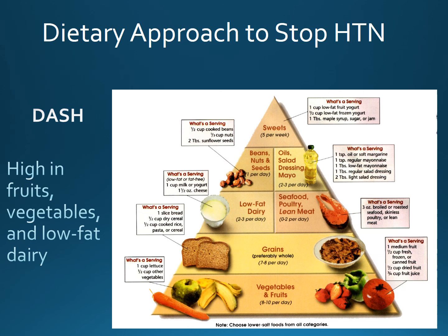The DASH diet is specific to hypertension and stands for Dietary Approach to Stop Hypertension. There is a standard DASH diet allowing up to 2,300 milligrams of sodium per day, and a lower sodium DASH diet restricting intake to 1,500 milligrams per day. The lower sodium version is recommended if the patient is over 51, Black, has hypertension, diabetes, or chronic kidney disease. The American Heart Association recommends 1,500 milligrams as the upper limit for all adults.